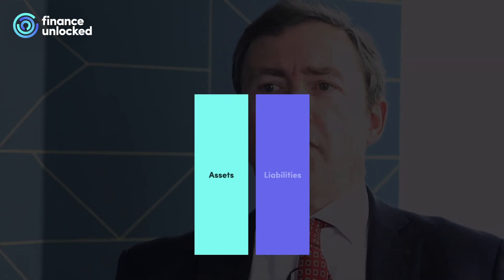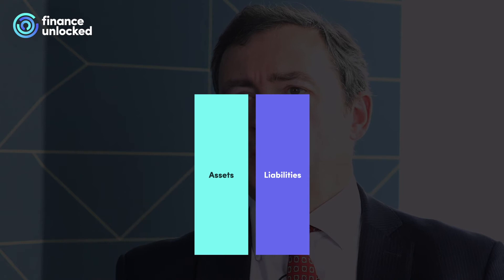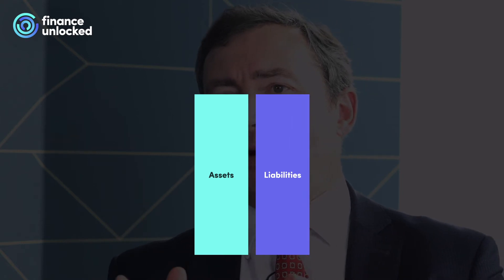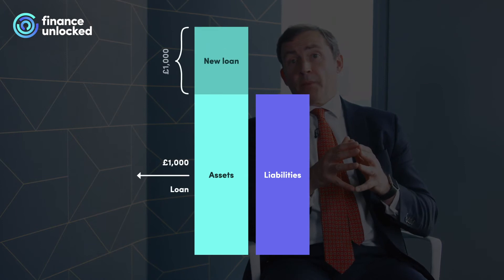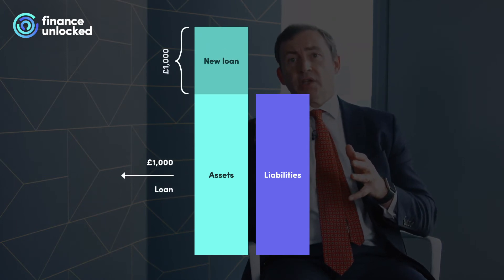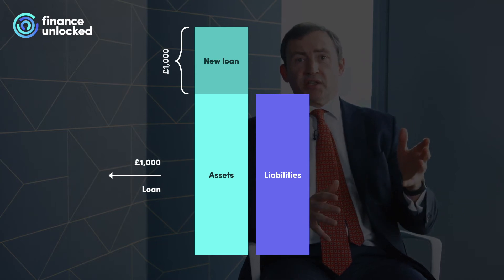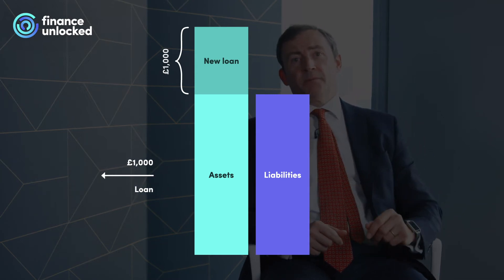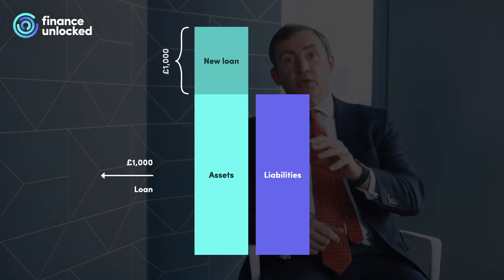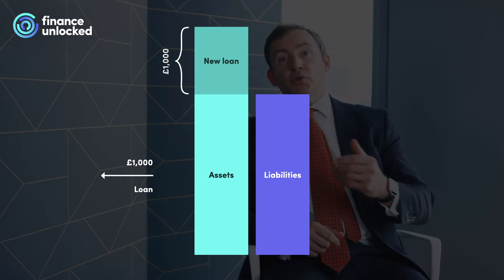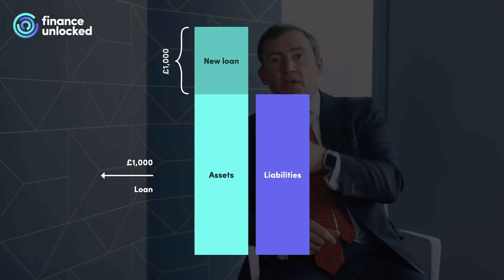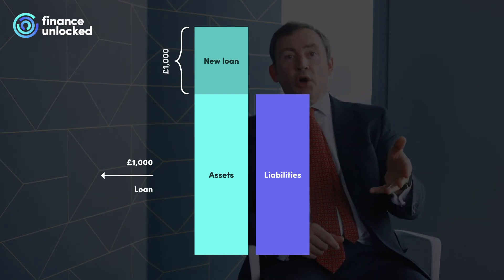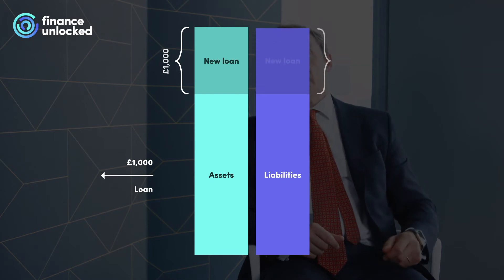Now, let's look at this transaction from the perspective of the bank's balance sheet. Here's the bank's balance sheet the moment before you walked into the branch. At the agreement of the loan, the bank's asset base increases by £1,000 in recognition of the financial asset that has been created — the £1,000 you have agreed to repay at the end of the two-year period. And secondly, in the act of crediting your current account, the bank has also created a corresponding liability of £1,000.